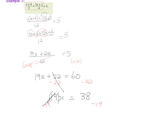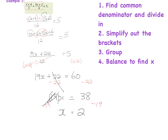The multiplied by 19 and divided by 19 cancel, leaving just x, which equals 38 divided by 19 — giving x equals 2. So our steps are: one, find your common denominator and divide into it; two, simplify out the brackets; three, group what you can; and four, balance to find x.